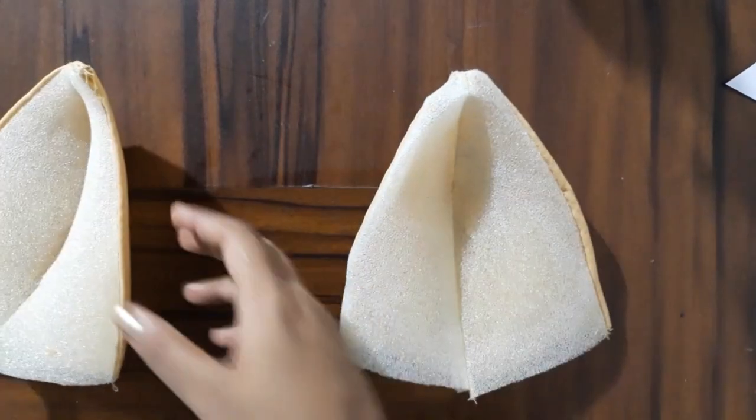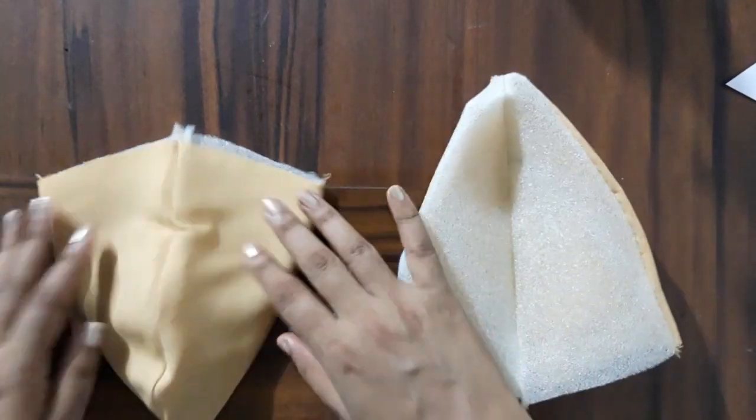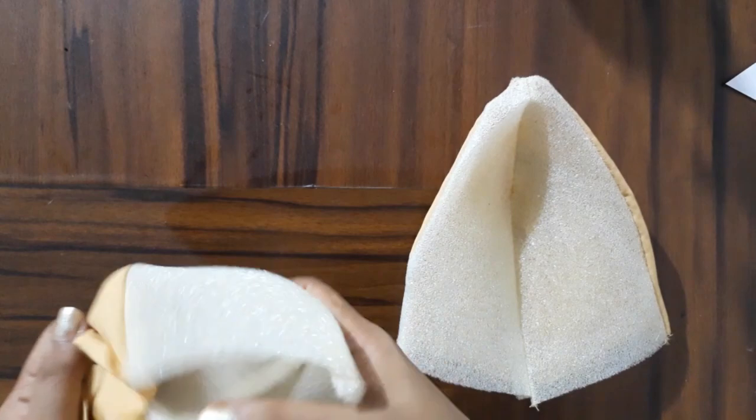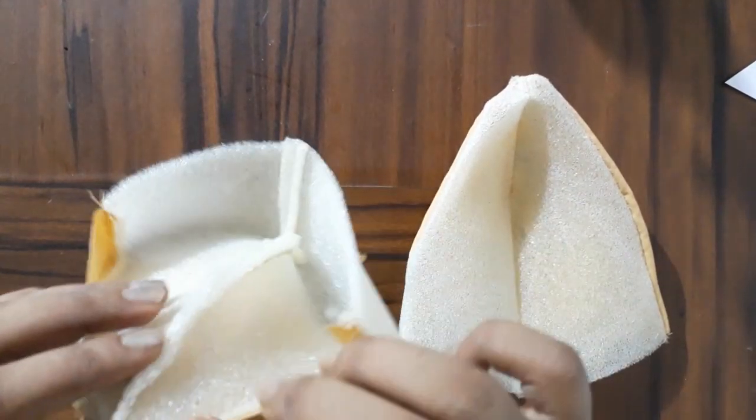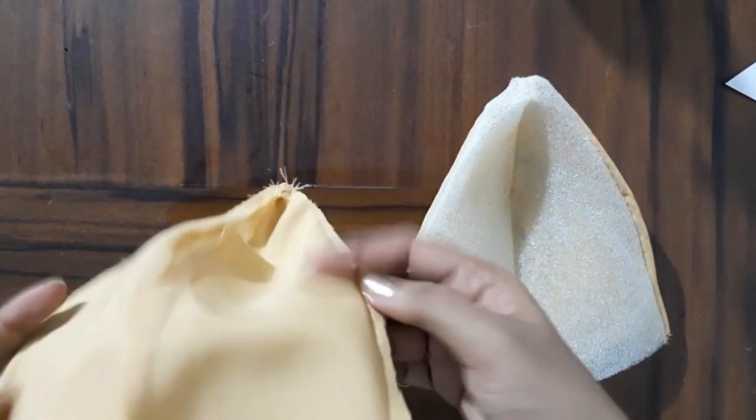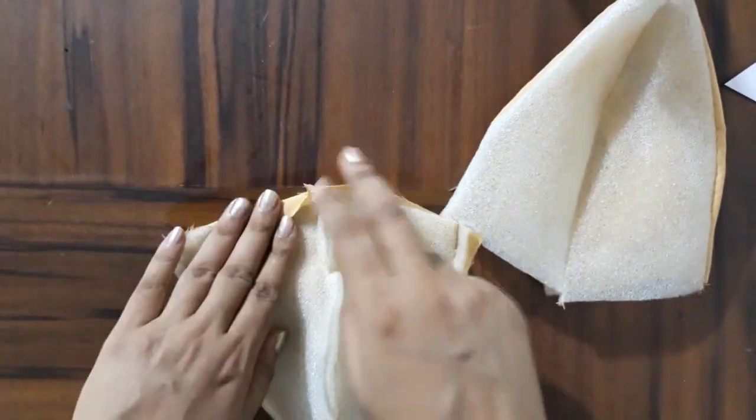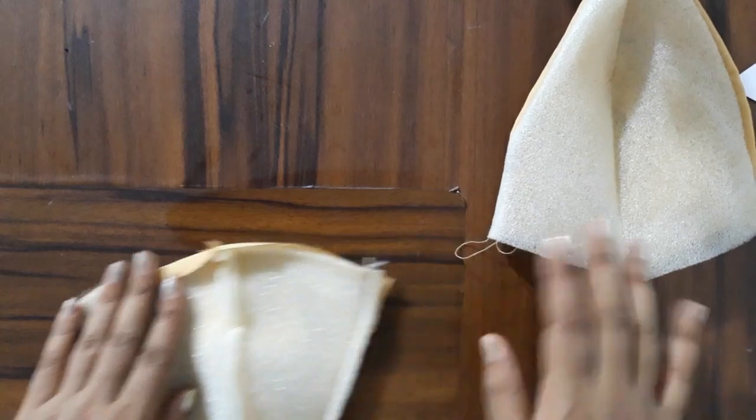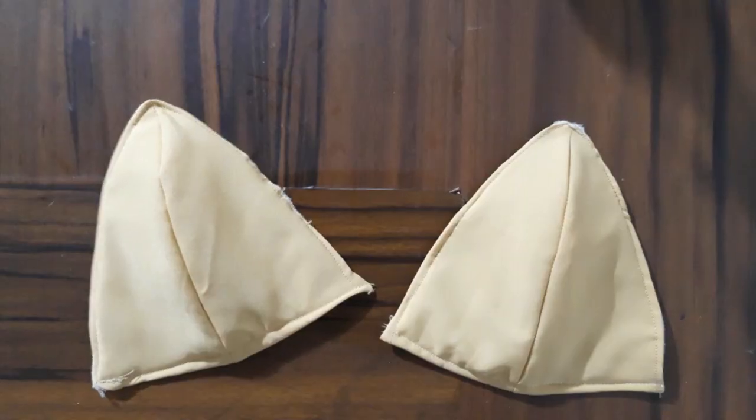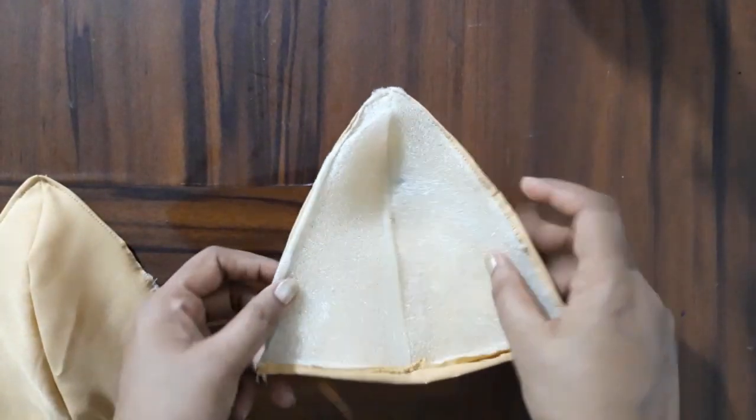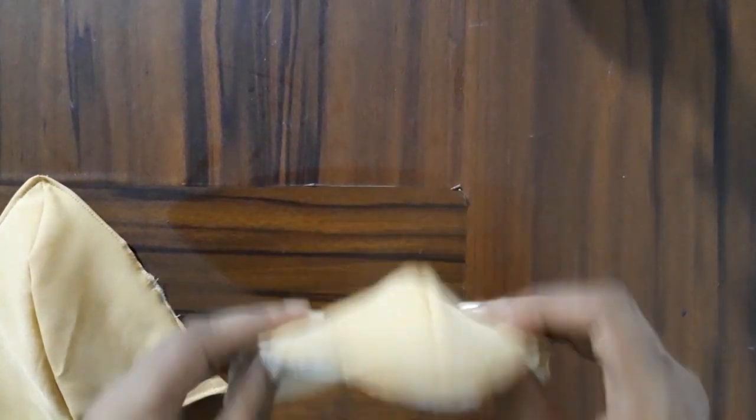Now you can see that this triangle sponge bra pad is ready. You can insert it in any bra, or directly use this to make a bra. You can make a very good padded bra. So you can see that this sponge pad is ready.